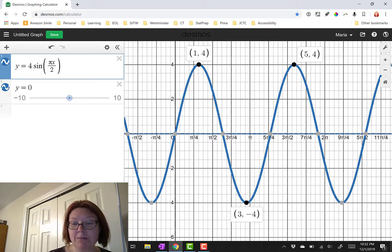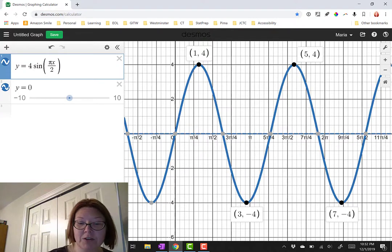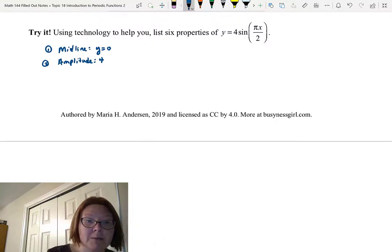Likewise, we could go from minimum to minimum. And between 3, negative 4 and 7, negative 4, the horizontal distance would be measured by 7 minus 3, which is again 4 units. So the period would be 4.